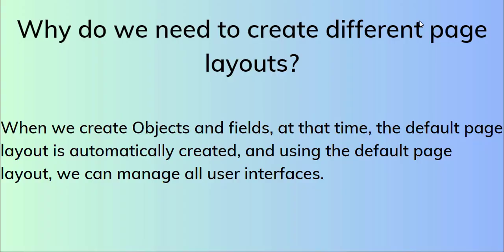When we create an object and fields, the default page layout is automatically created, and using the default page layout we can manage all user interfaces. But when we create a page layout, every time we need to assign the page layout to a particular profile by clicking on page layout assignment. To solve this problem, we will create a record type, and using that record type the user can select the page layout they want to work with.